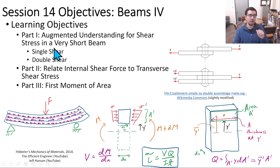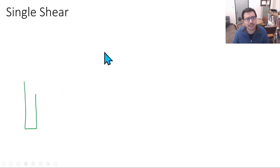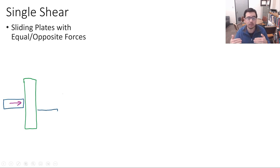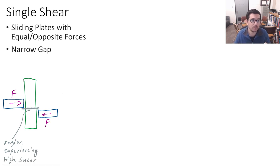Let's continue with part one that discusses single and double shear. In single shear we're looking at a scenario where maybe we have a pin or some type of material or object where there are sliding plates with equal and opposite forces. Within or between vertically in this case, these two plates, there is what we'll call a narrow gap. This narrow gap is the region that is experiencing high shear.